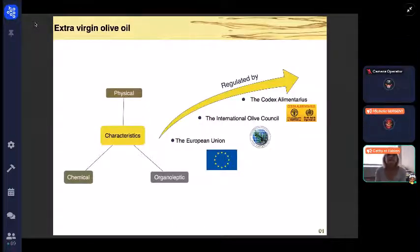First, here are some details about extra virgin olive oil. Extra virgin olive oil is one of the only agri-food products for which the physical, chemical, and organoleptic characteristics are regulated by the European Union, the International Olive Council, and the Codex Alimentarius, depending on where they are traded.